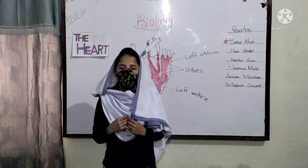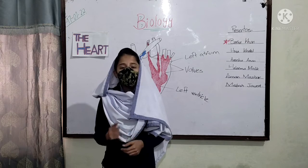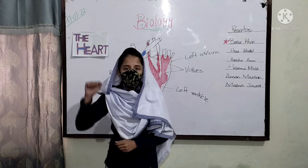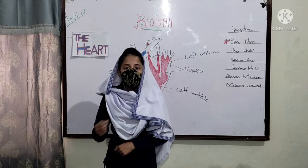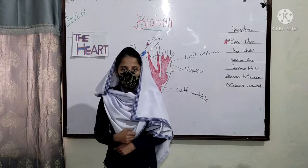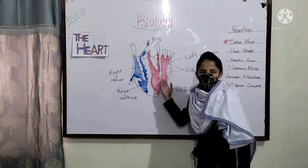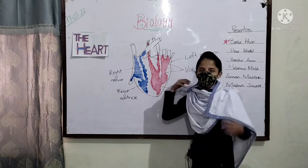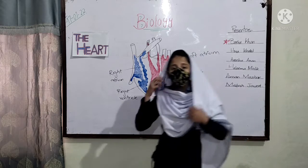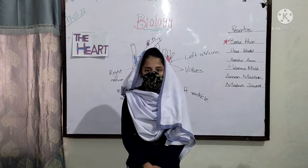The transport of blood in our body is performed by our heart. Our heart is a muscular organ about the size of our fist. It is present in our chest. This is the diagram of the heart.